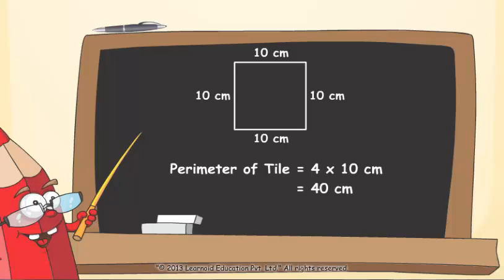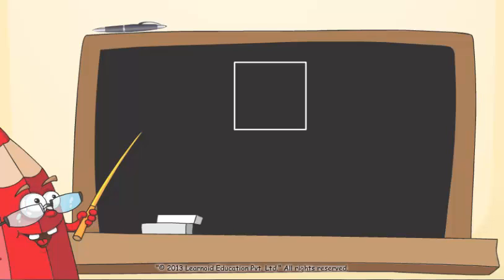If we know the perimeter of square, then side of square is equal to perimeter upon 4.